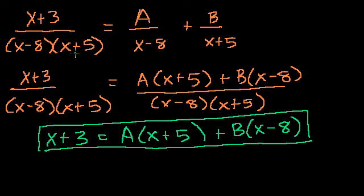We said that this rational expression can be written as the sum of these two simpler rational expressions. When you add these two fractions or expressions, you get this. You just found a common denominator, then multiply this times the denominator of the other one. The denominators are the same, so now we just have to set the numerators equal to each other. That's where we got this right here.